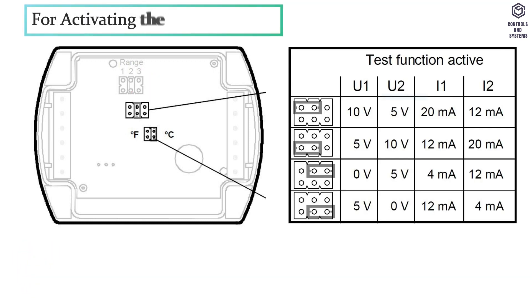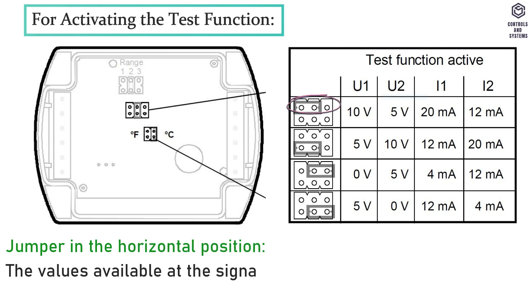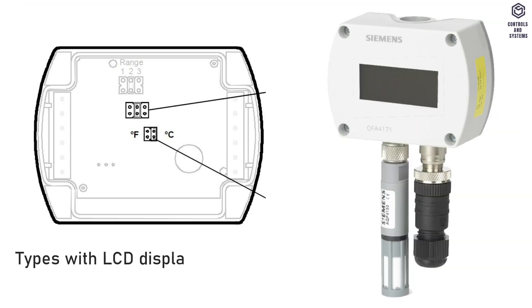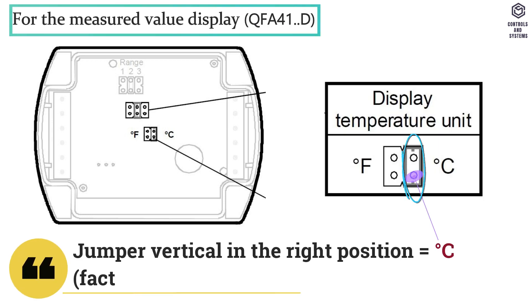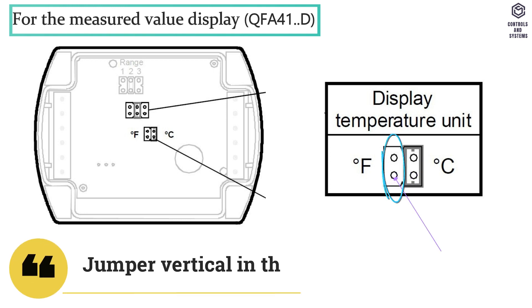For activating the test function, if jumper in the horizontal position, the values available at the signal output are those given in the table test function active. Types with LCD display have a second setting element with 4 pins and a jumper. For the measured value display QFA41D, if jumper vertical in the right position means Celsius, if jumper vertical in the left position means Fahrenheit.